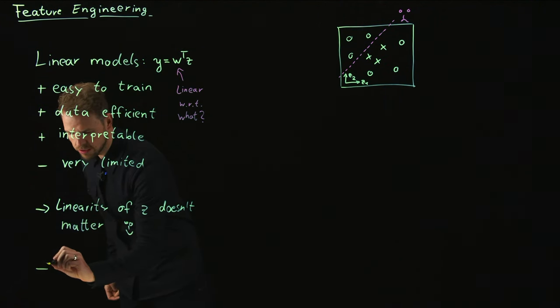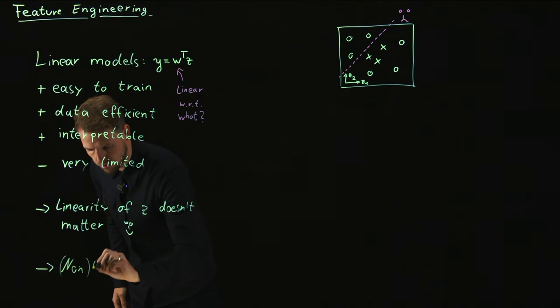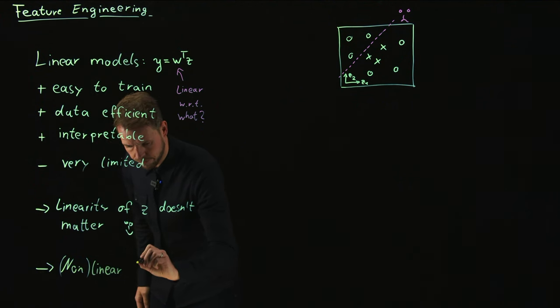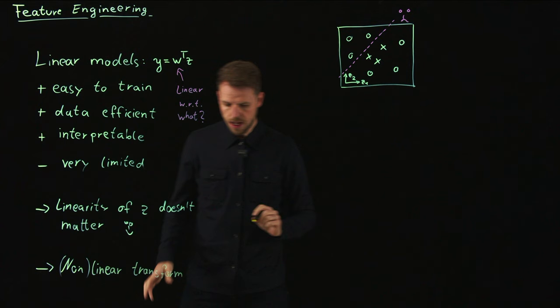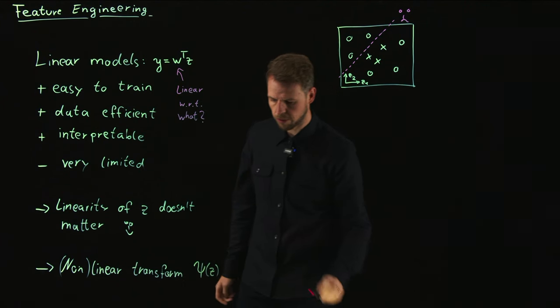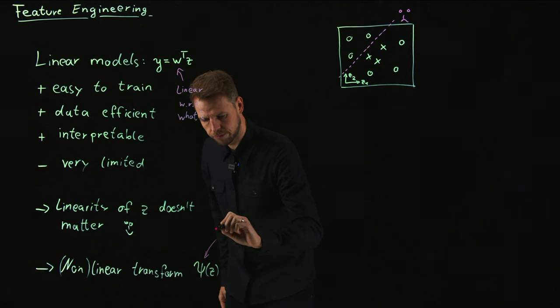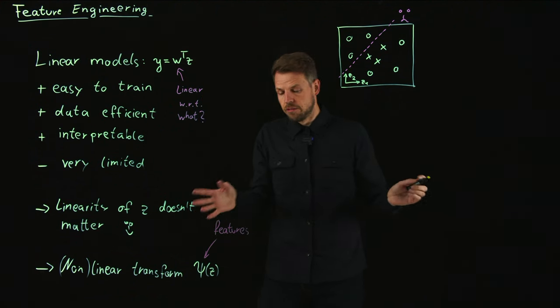So what we will do, and this is what feature engineering really means, we introduce a potentially nonlinear transform. It can also be linear, but can also be a nonlinear transform. This nonlinear transform is what we're going to call Psi of z, some function that transforms z to some other space. And this is what we will call features.